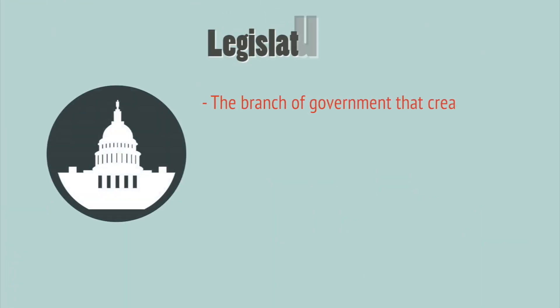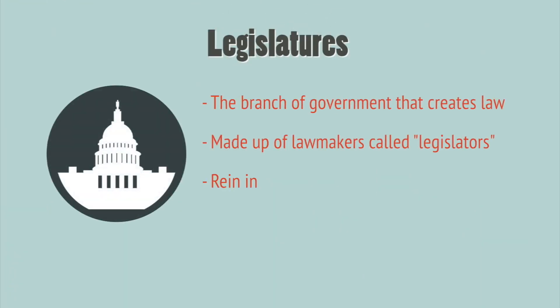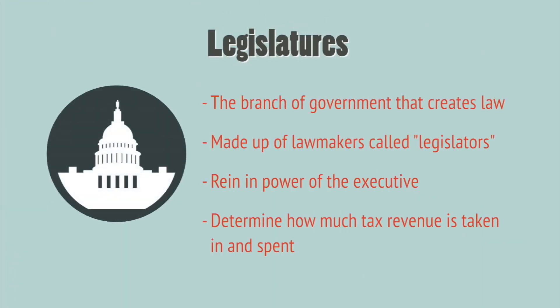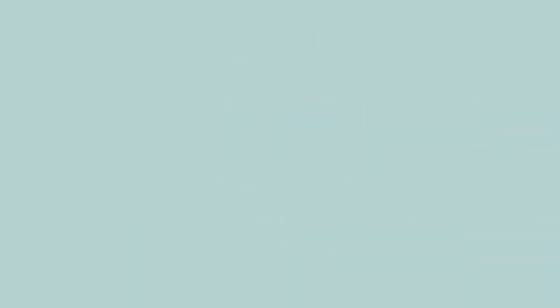The first state institution we should look at is the legislature, which is the branch of government that creates law. Legislatures are deliberative bodies, made up of many people called legislators who represent different groups of people in a state. Their primary role is to deliberate and create laws, but they are often also responsible for reining in the power of executives and determining how much tax revenue the state takes in and spends.